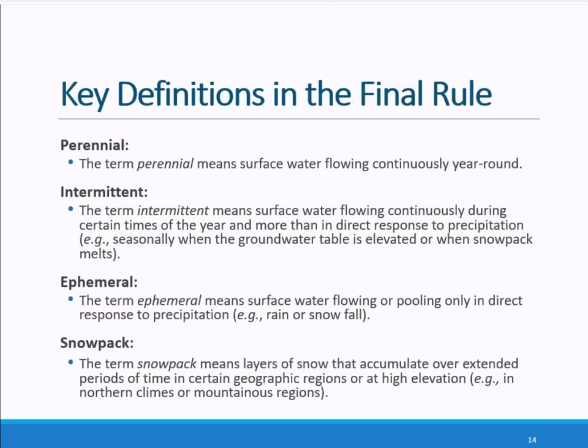Several definitions are particularly relevant to understanding the definition of tributary. To provide clarity, the agencies have defined perennial, intermittent, and ephemeral. The use of the term indirect response to precipitation in the definition of intermittent and ephemeral is intended to help distinguish between surface water flow solely caused by individual precipitation events — including multiple individual back-to-back storms — and continuous flow resulting, for example, from weeks or months-long accumulation of precipitation in the form of snowpack that melts slowly over time, or an elevated groundwater table that provides base flow to the channel bed.